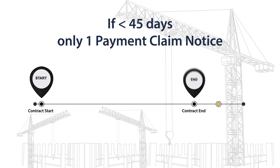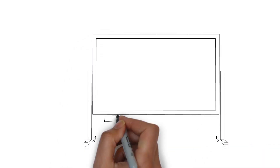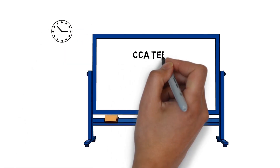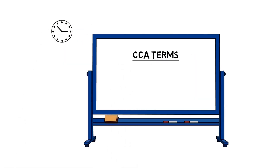If the project is estimated to last less than 45 days, the payment claim date is 14 days following the completion of the works. For this project length, only one payment claim notice will be submitted. There are three terms to be aware of in relation to the payment process under the CCA.